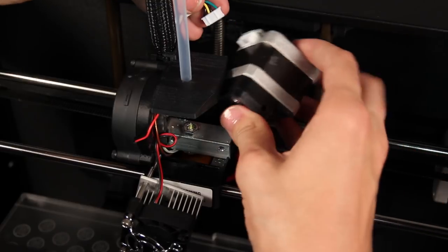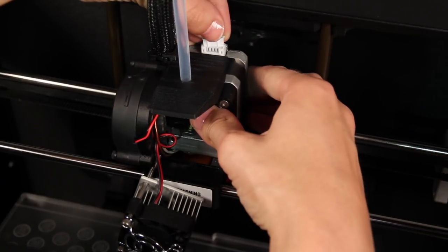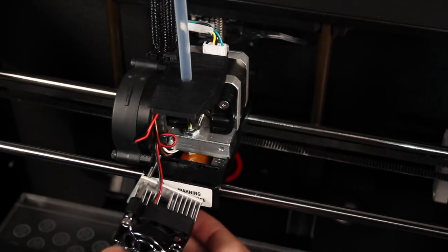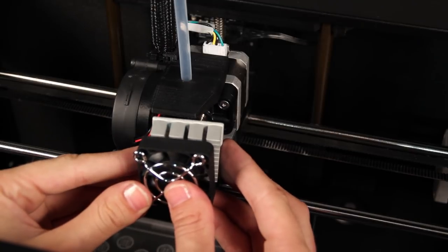reassemble your extruder by sliding the stepper motor back into place, reconnecting the motor cable, and replacing the two screws at the front of the extruder.